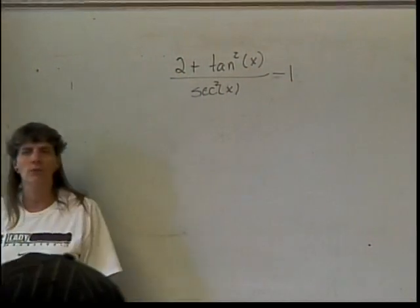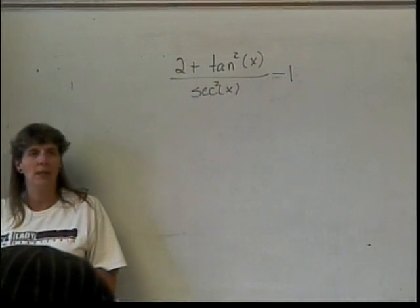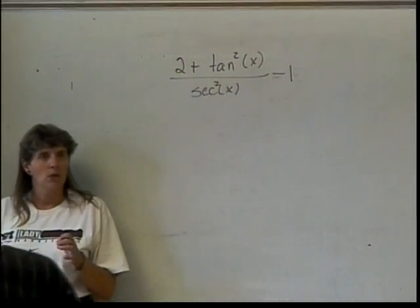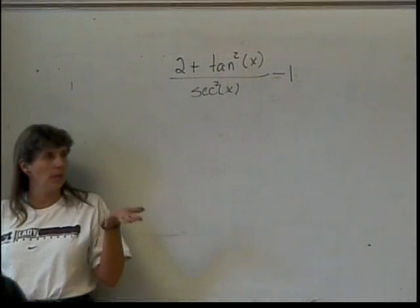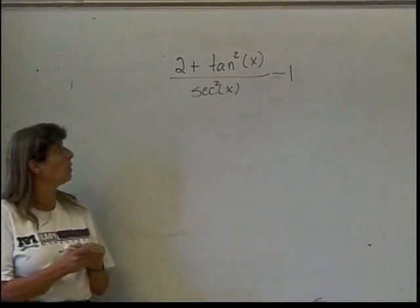So, if I'm rewriting it in terms of sines and cosines, what should I be getting rid of? I should change my tangent, and I should be changing my secant. Alright, so let's do that.